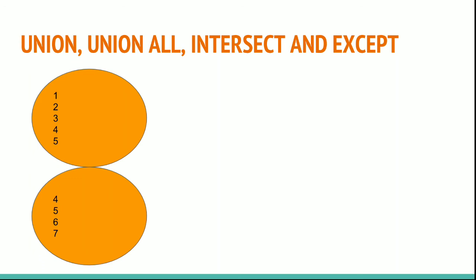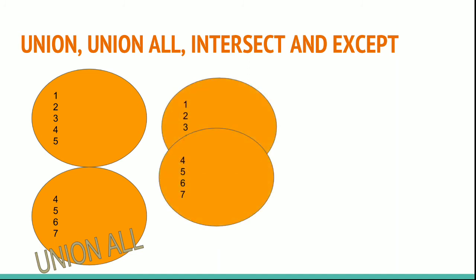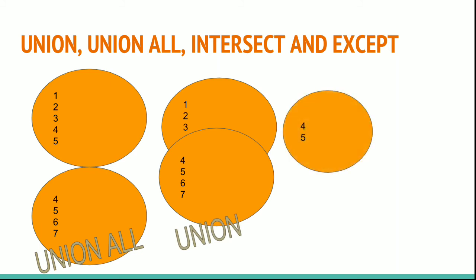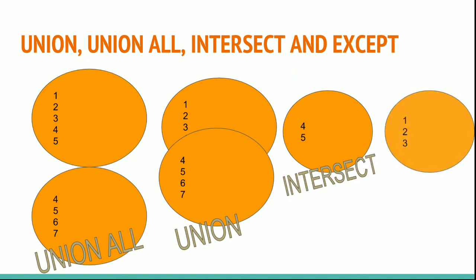Union and Union All in diagrams — you can see the same in Venn diagrams. Records 1, 2, 3, 4, 5 in one table and 4, 5, 6, 7 in another: for UNION ALL, all records from both tables are returned; for UNION, only unique records are returned. For INTERSECT, only the common records 4 and 5 are returned. For EXCEPT, only the records in the first table are returned, excluding the records present in the second table.